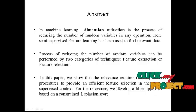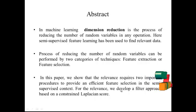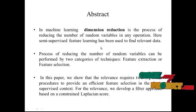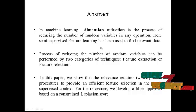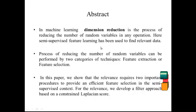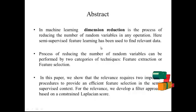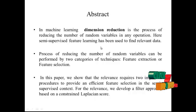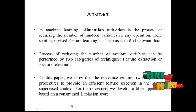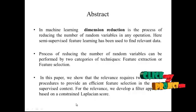Now let me discuss the abstract of our process. In machine learning, dimensionality reduction is one of the processes of reducing the number of random variables in any operation. Here we are using semi-supervised feature selection to find relevant data and remove redundant features. This process can be performed by two categories of techniques: Feature Extraction or Feature Selection. We show that relevance requires two important procedures to provide efficient feature selection in the semi-supervised context. For relevance, we develop a filtered approach based on a constrained relevance score.